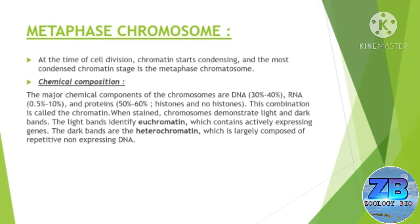Now let's start with the metaphase chromosome. At the time of cell division, chromatin starts condensing, and the most condensed chromatin stage is the metaphase chromosome. The major chemical components of the chromosomes are DNA 30% to 40%, RNA 0.5% to 10%, and proteins 50% to 60%, histones and non-histones. This combination is called the chromatin.